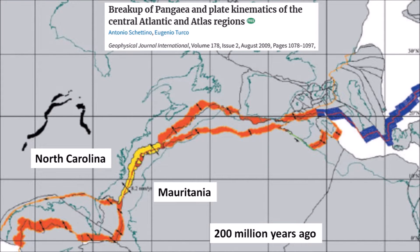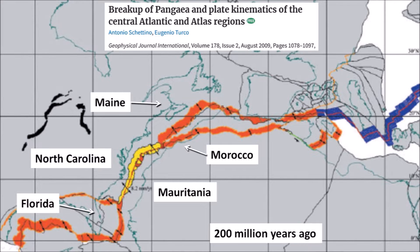This image illustrates the tectonic plate reconstruction at the Triassic-Jurassic boundary 200 million years ago. The oceanic crust associated with the magnetic anomalies is shown in yellow and the orange lines identify the boundaries of rift zones. Present-day coastlines are shown for reference and North Carolina and Mauritania are labeled. The east coast of the United States, from Maine to Florida, was adjacent to Morocco and Mauritania in western Africa. The volcanic eruption of the central Atlantic large igneous province caused a mass extinction that killed 20% of all marine families.